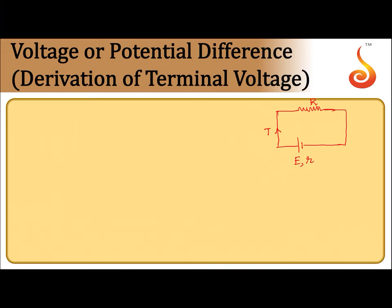Let the current drawn from the cell be I. The EMF of the cell E should be equal to the potential difference across the external resistance plus the potential difference across the internal resistance — that is, I times capital R plus I times small r.